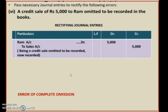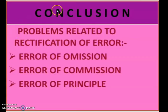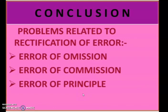This is how you pass different types of rectification entries related to different types of errors. Today we discussed problems related to rectification of errors — errors like error of omission, commission, and principles. You have to practice more problems from your textbook, attend the test paper, and write down notes in your accountancy notebooks. We will meet in the next class where we will learn about suspense accounts.